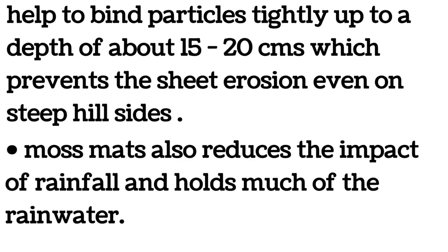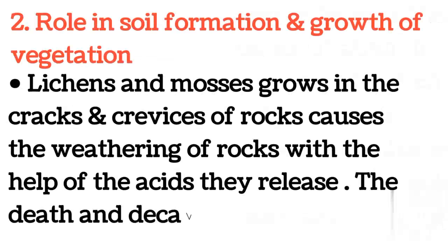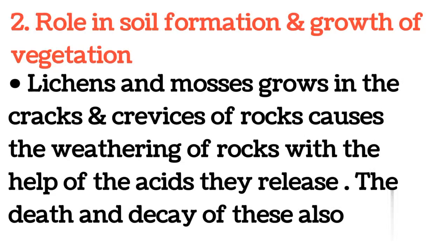Moss mats also reduce the impact of rainfall and hold much of the rainwater. Two: role in soil formation and growth of vegetation. Lichens and mosses grow in the cracks and crevices of rocks, causing the weathering of rocks with the help of the acids they release. The death and decay of these also contribute to fertile soil formation.